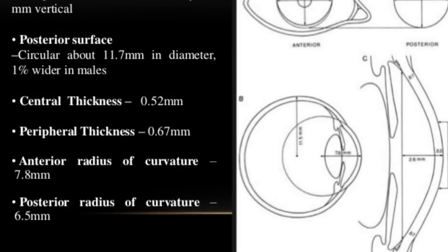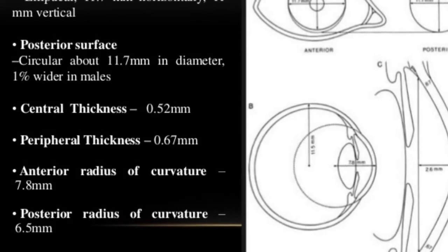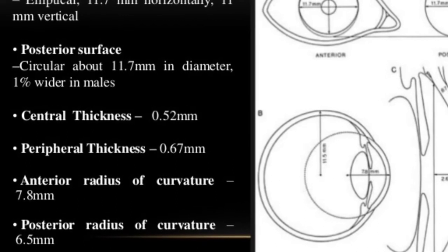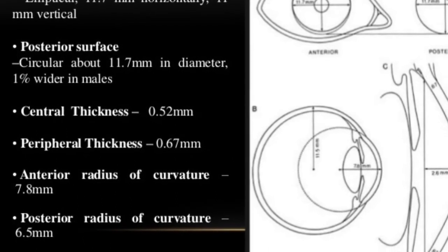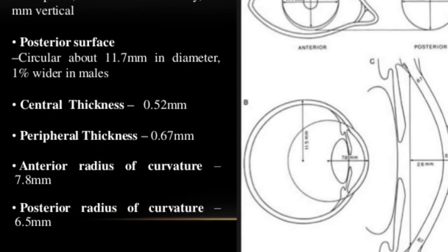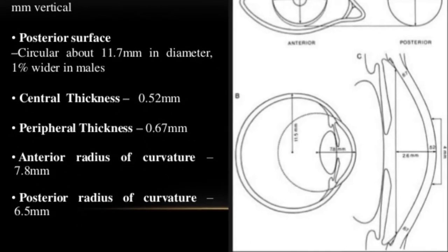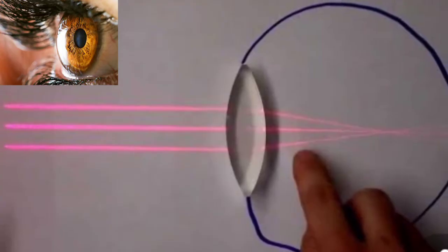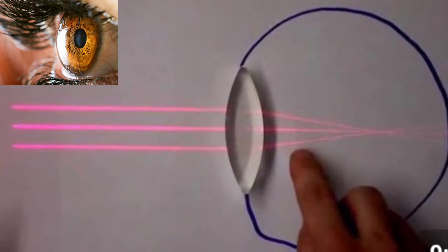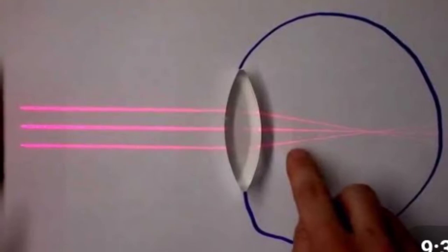The central 5 mm area of the cornea forms the most powerful refractive surface of the eye. The anterior and posterior radii of curvature of the central part of the cornea are 7.8 mm and 6.5 mm respectively. Refractive power of the anterior surface of the cornea is plus 48 diopters and that of the posterior surface is minus 5 diopters.